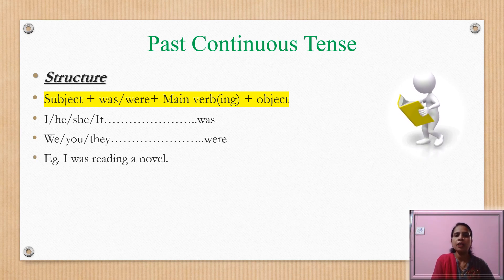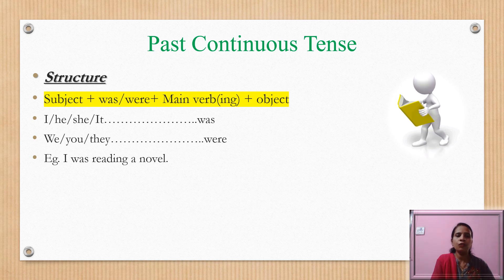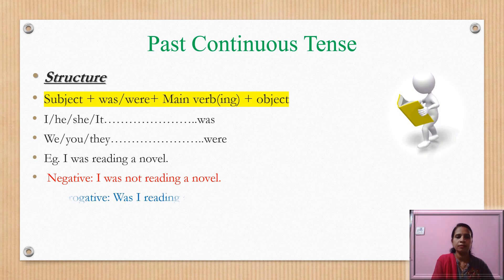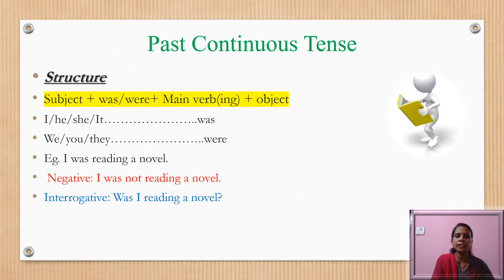For example, 'I was reading a novel' — 'I' is the singular subject. If we use 'we': 'We were reading a novel.' For negative sentences, add 'not' to the helping verb: 'was not.' The sentence becomes: 'I was not reading a novel.' For interrogative sentences, bring the helping verb forward: 'Was I reading a novel?'